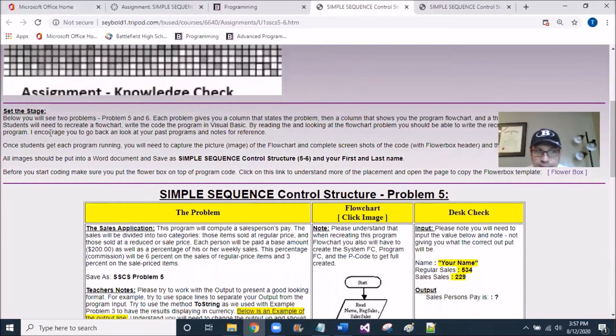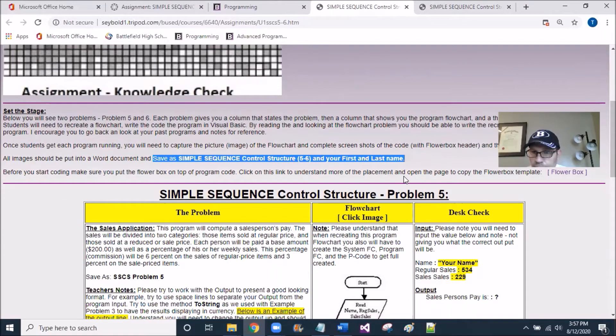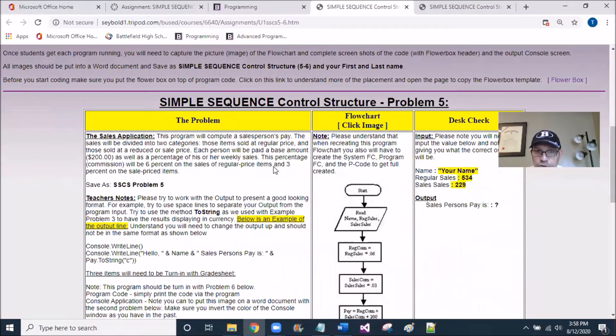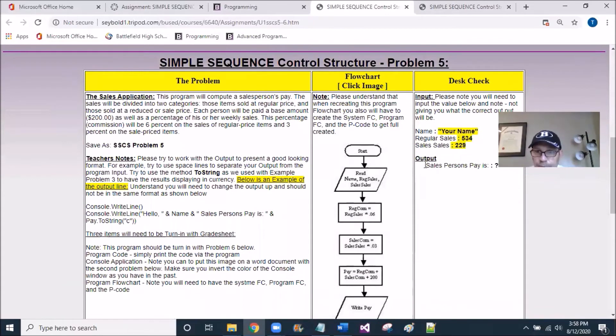So I'm now going to move over back over to the assignment page, and I'm going to ask you to read the Set the Stage. One of the key things I'm going to talk about is the Word document right here, and you're going to have to create a Word document, this is the file name with your first and last name on it. So there's two problems, there's Problem 5 and 6. I'm now going to jump down into five, but please, you have to read the Set the Stage.